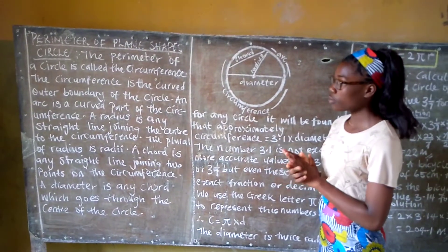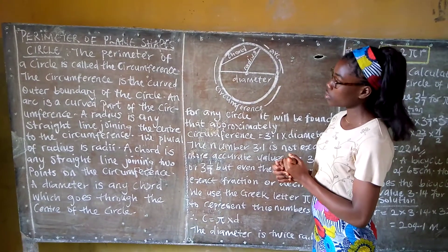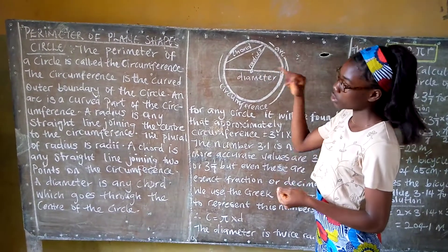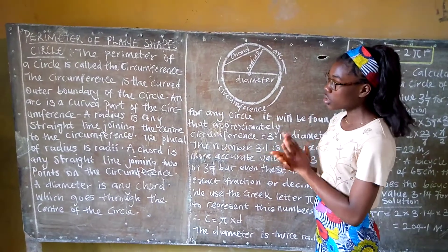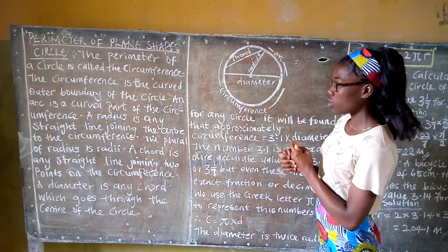An arc is a curved part of the circumference. We also have a radius. A radius is any straight line joining the center to the circumference.